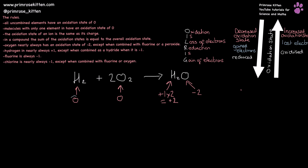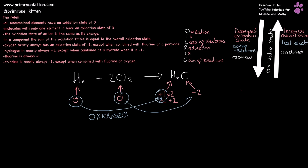We can see that hydrogen has gone from zero to minus one — it has increased its oxidation state, it has lost an electron so it has been oxidised. Oxygen has gone from zero to minus two, the number has gone down, it has gained electrons so it has been reduced. And because something has been oxidised and something else has been reduced, this is a redox reaction.